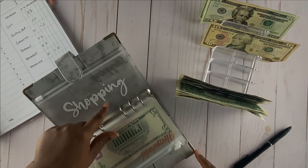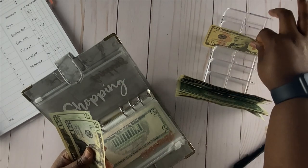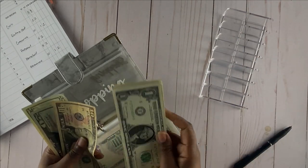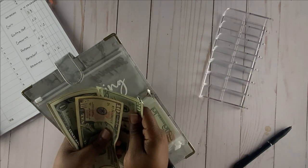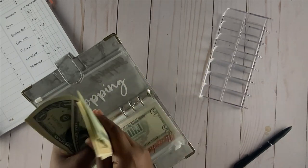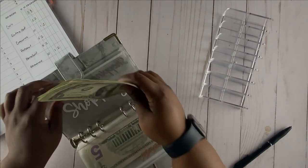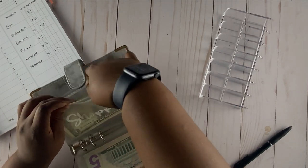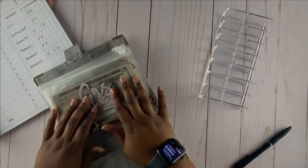Last is going to be my allowance, which is going to go into the shopping folder. We are going to do the two twenties, one ten, and then we should have 10 ones. Counting it out, that's $60. We put our $60 in there. And there we are. We are stuffed and ready for the week.